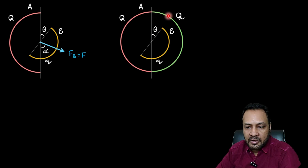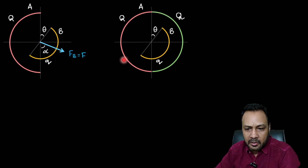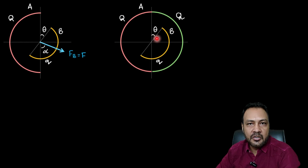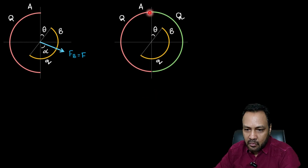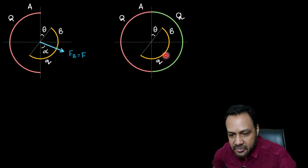Now, I place a mirror image of shell A here having the same distributed charge. This makes a complete uniformly charged spherical shell. Within that complete uniformly charged shell, hemispherical shell B is placed. Because of this complete uniformly charged shell, the net electric field inside is zero.